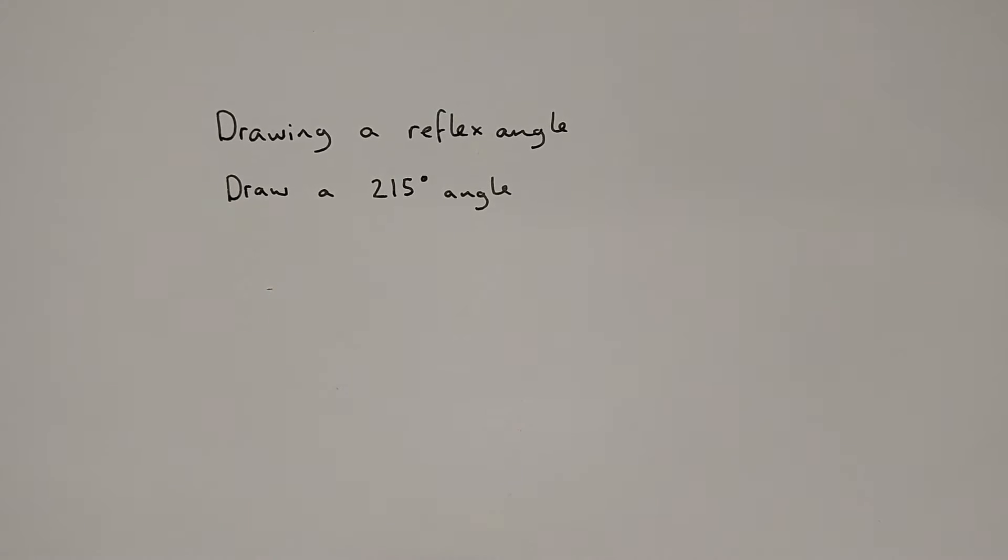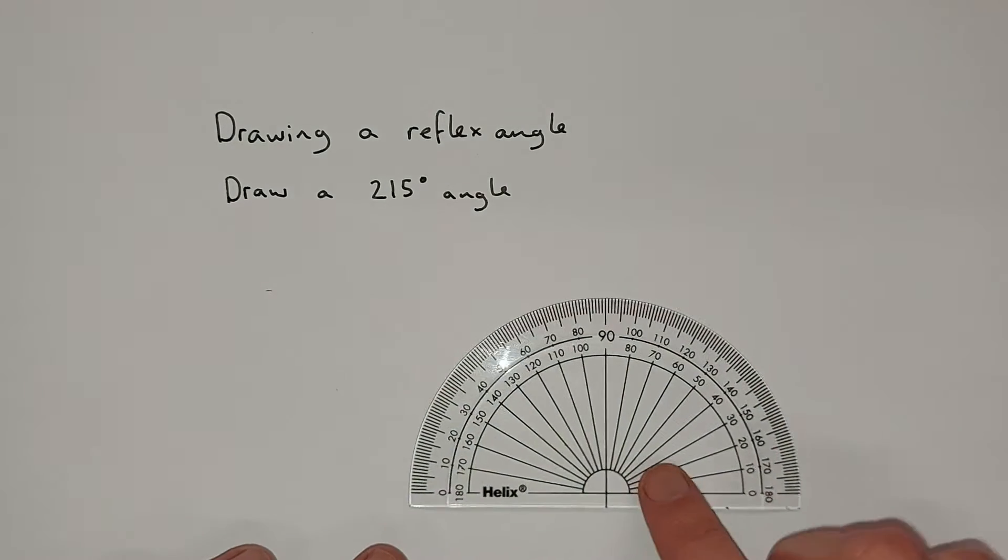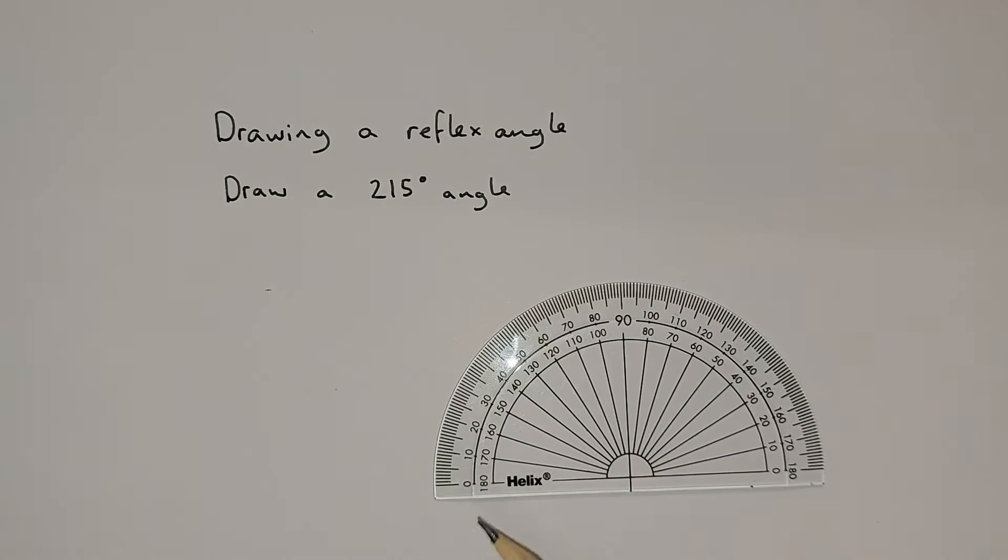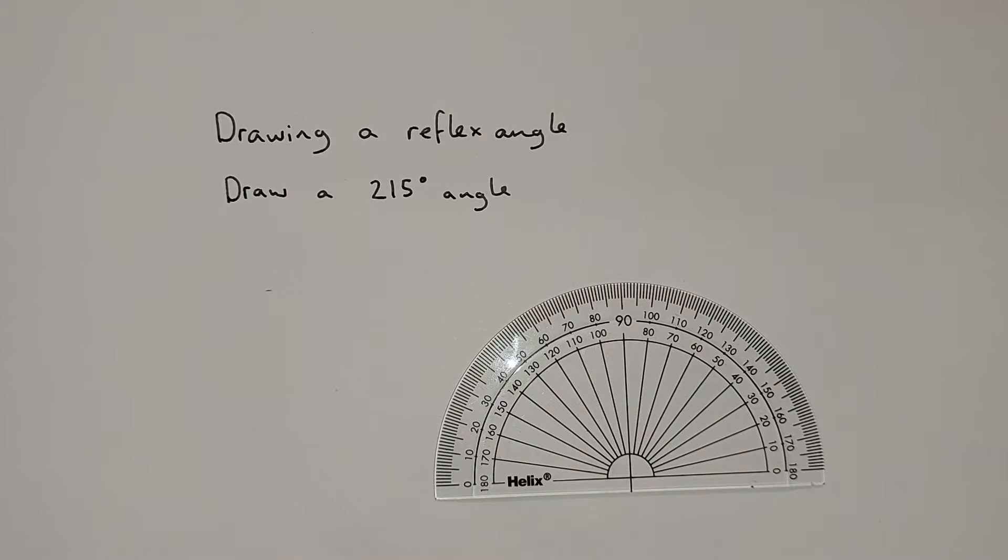We're going to look at drawing reflex angles now. It's a little bit harder than drawing an acute and obtuse angle just because of the limitations of a protractor. You can see here, this only goes up to 180 degrees and we're looking at an angle that's more than 180 degrees.